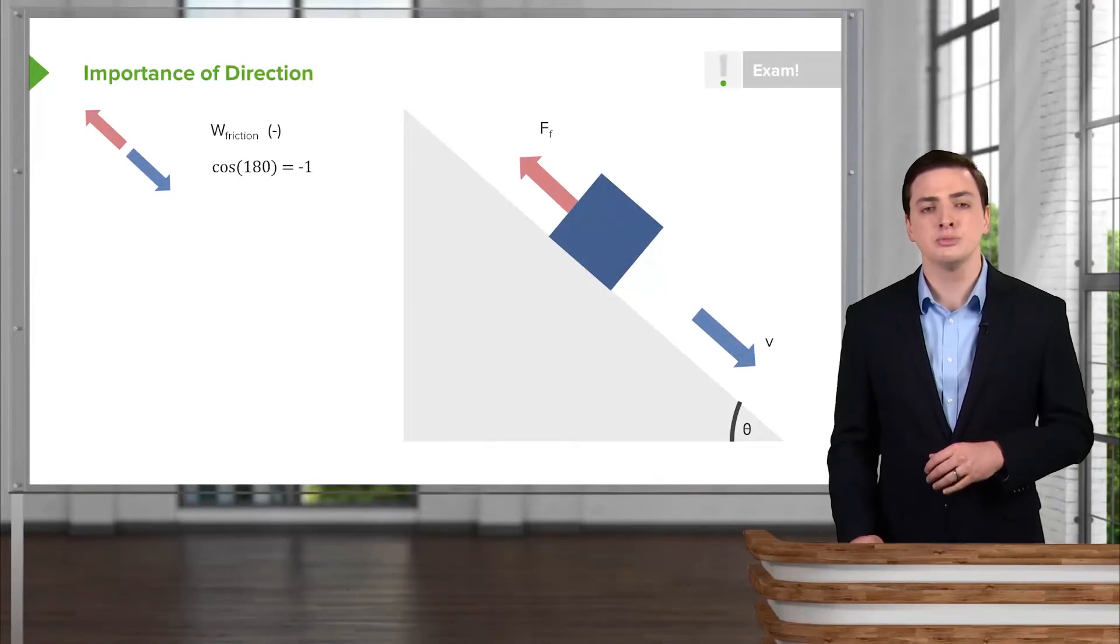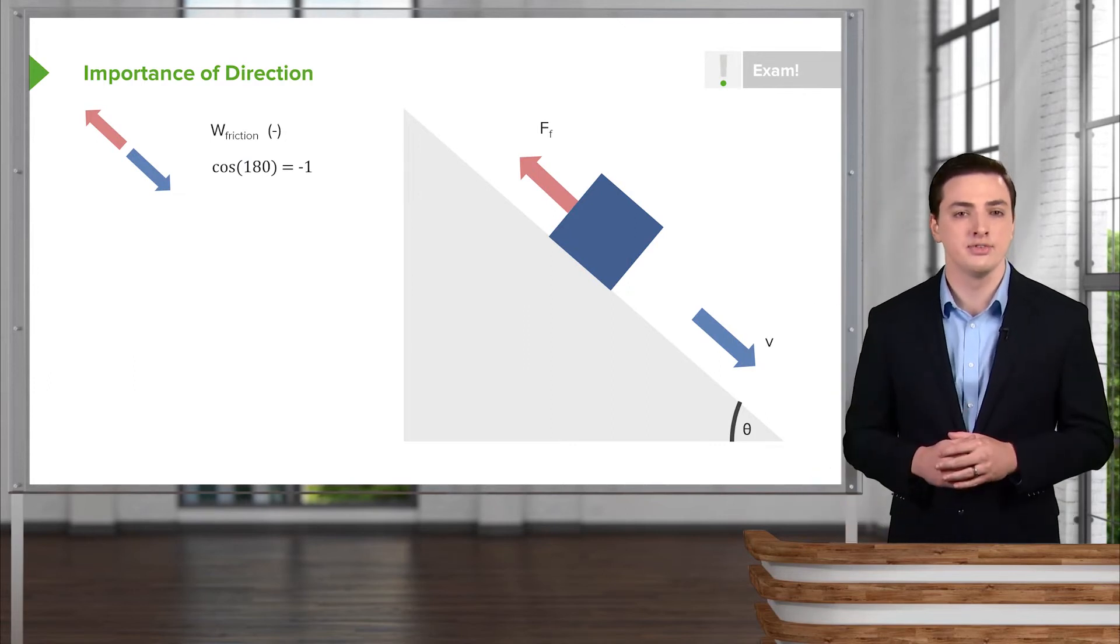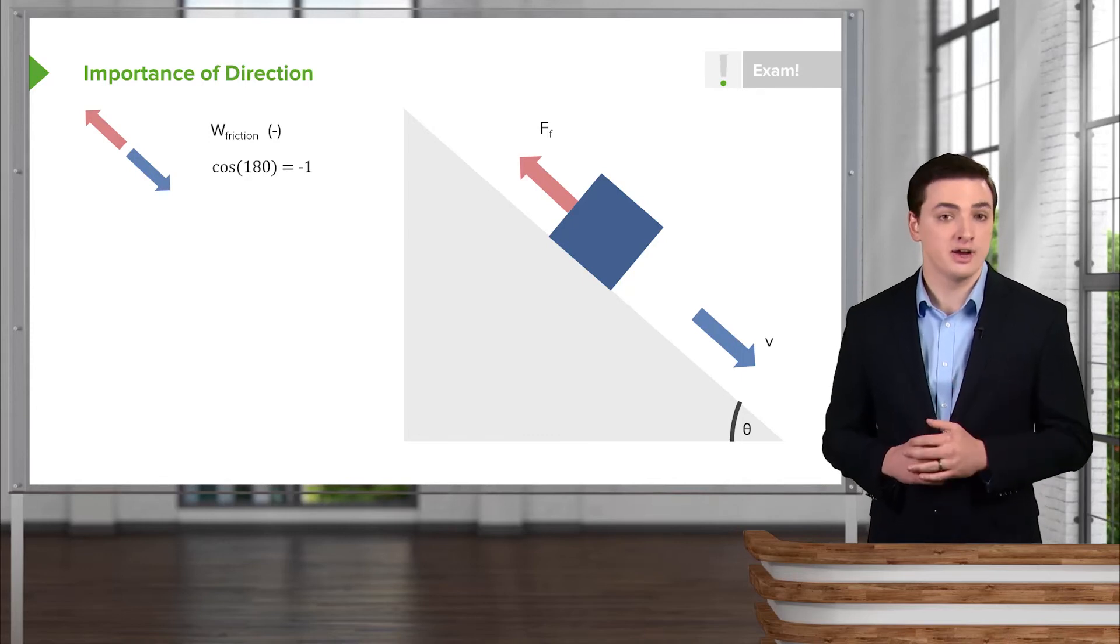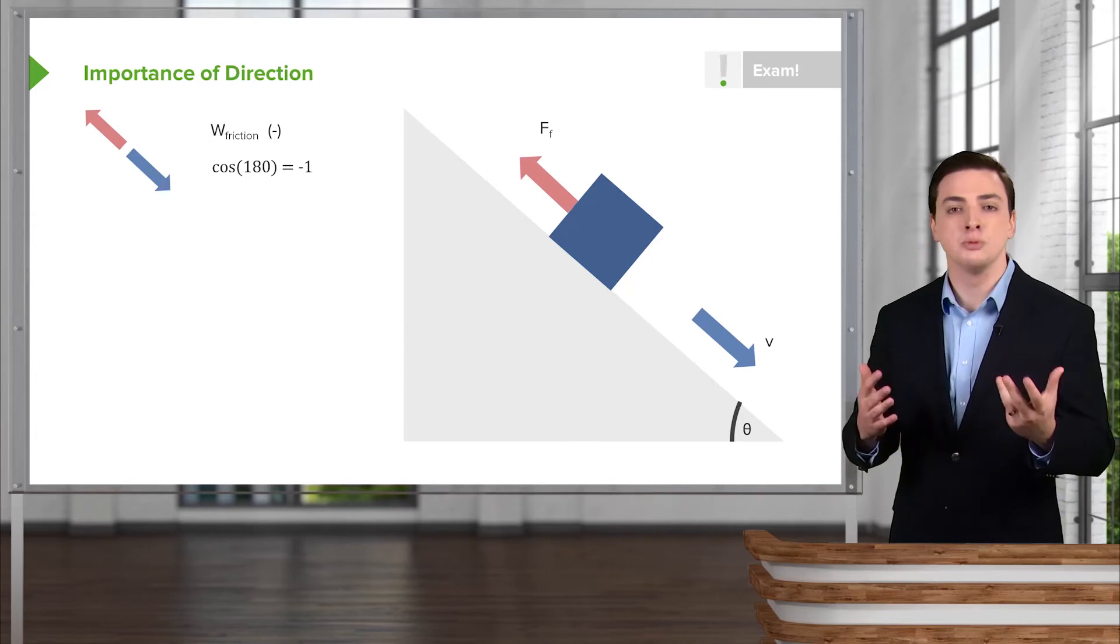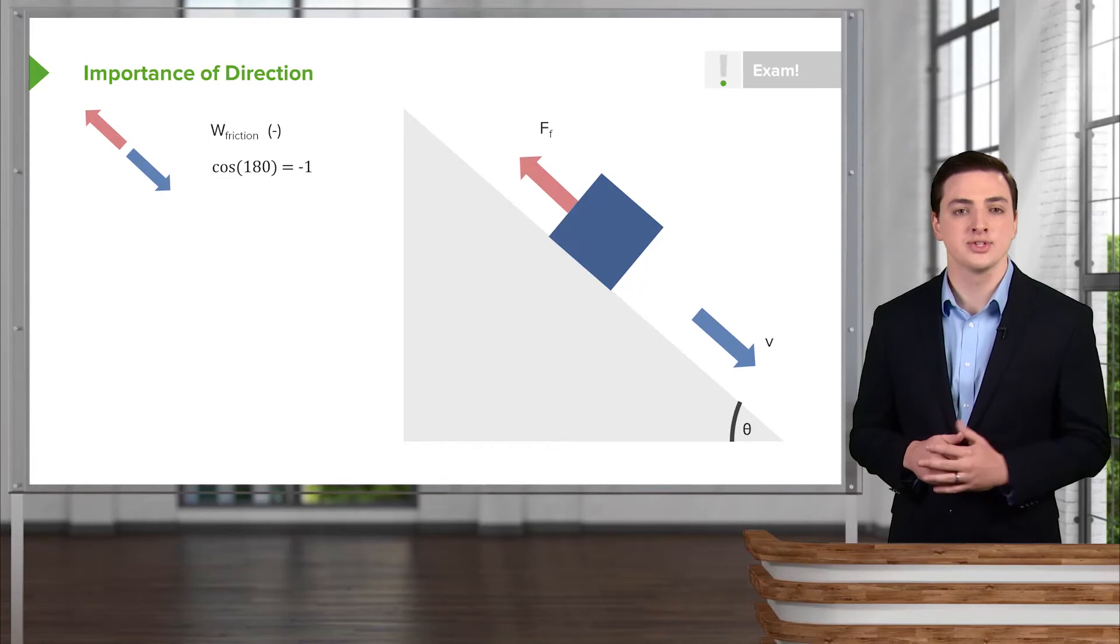Let's look in more detail now about the importance of direction when considering work and how to find this cosine of theta term. The key scenarios that you should be very comfortable with and familiar with are these. Let's take a slope example as a good way of thinking about all these different possible directions and forces.